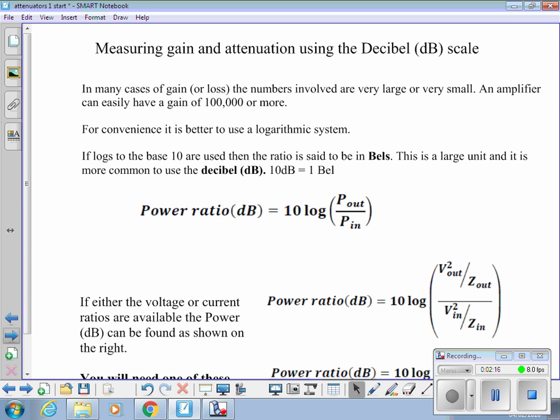In many cases, we're now talking about measuring gain attenuation using the decibel or dB scale. You'll probably have seen that on noise meters and amplifiers and various bits and pieces. In many cases, gain or loss, the numbers involved are very large or very small. An amplifier can easily have a gain of 100,000 or more.